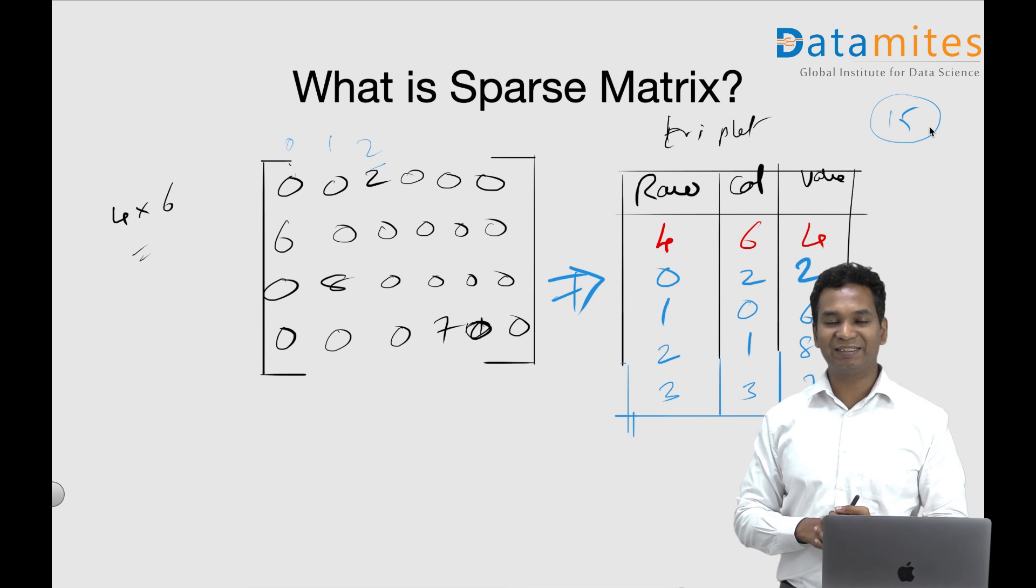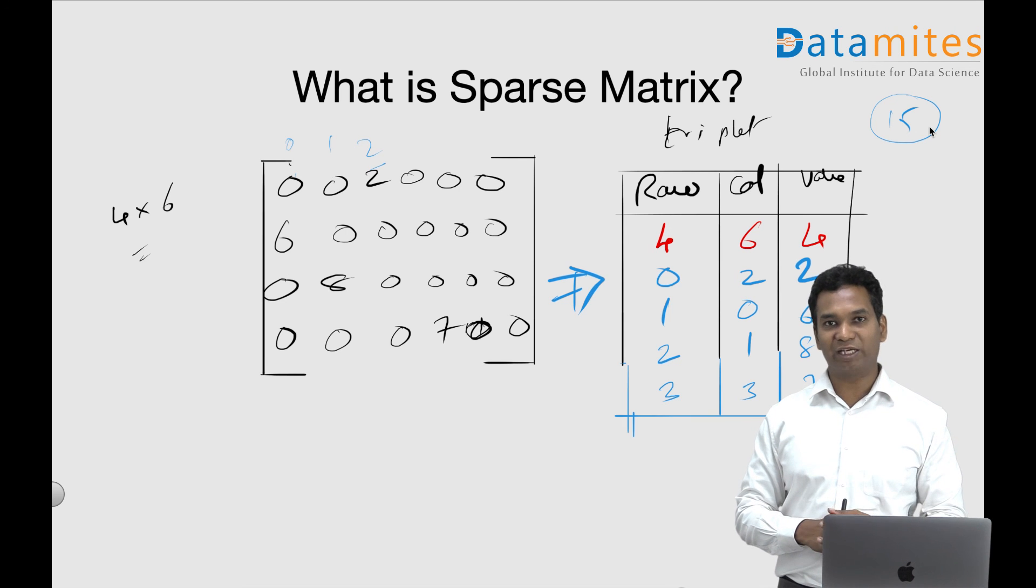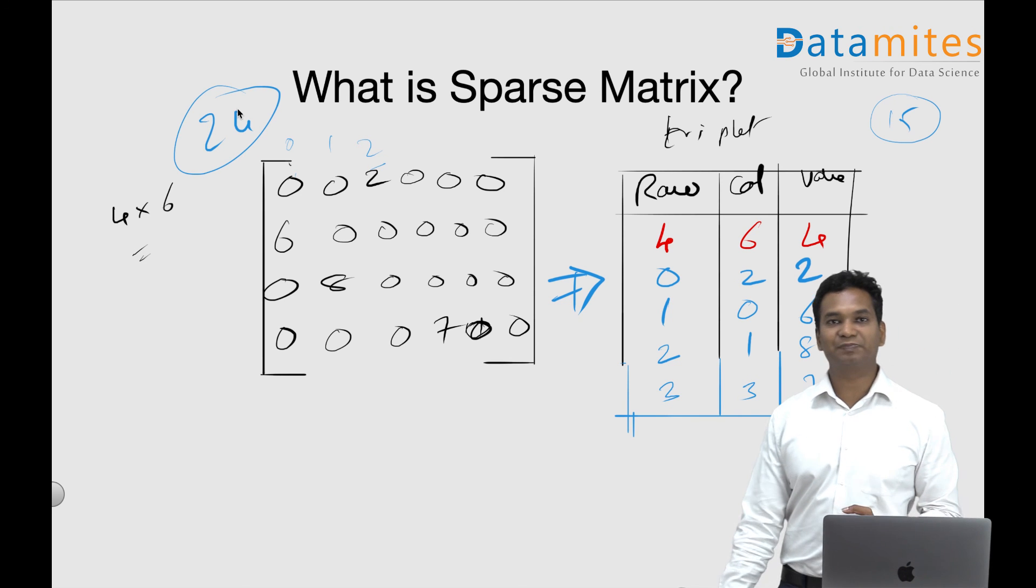huge sparse matrix. And those kind of matrices, this triplet representation kind of cuts down to one percent or even less, 0.5 percent data numbers when compared to the original matrix. Here you maybe don't see it, but the concept - this is sparse matrix.